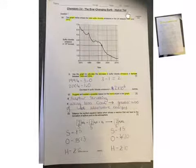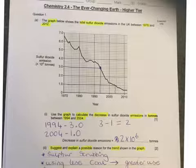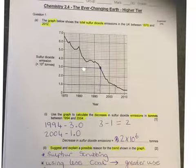Chemistry 2.4, the ever-changing earth. This question was looking at a graph showing the total sulfur dioxide emissions between 1970 and 2012. As you can see, it's definitely at a decreasing rate, quite steady if you were to draw a line of best fit through that.